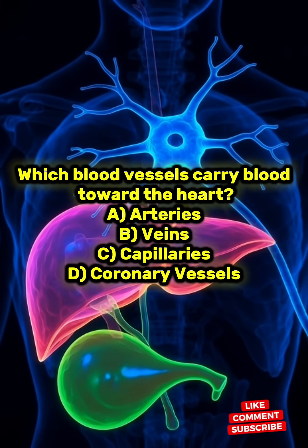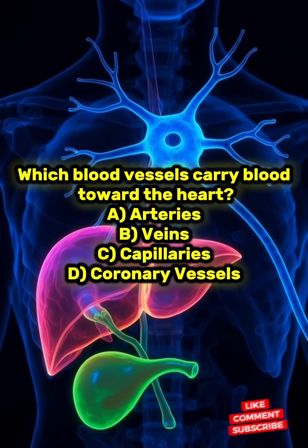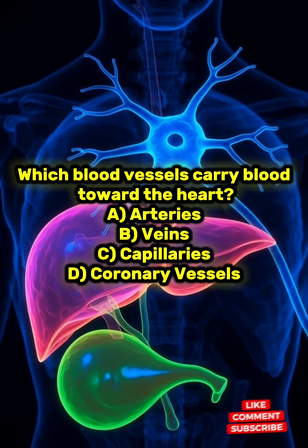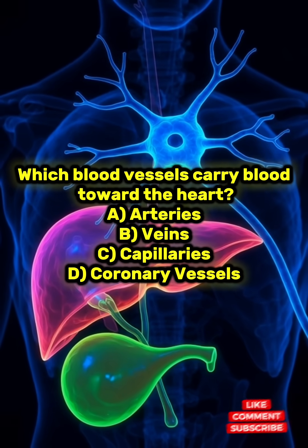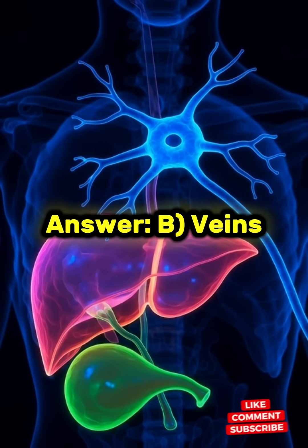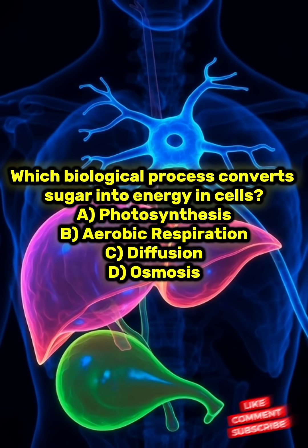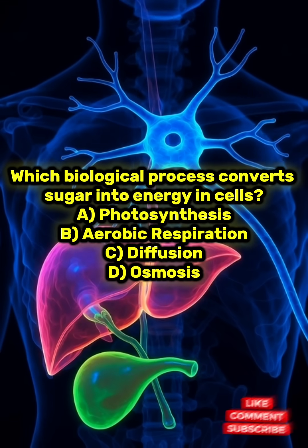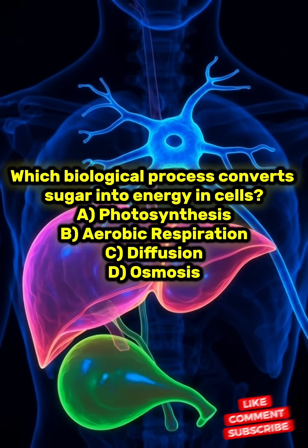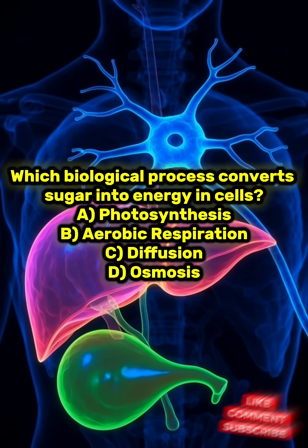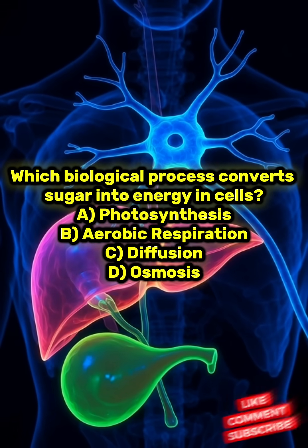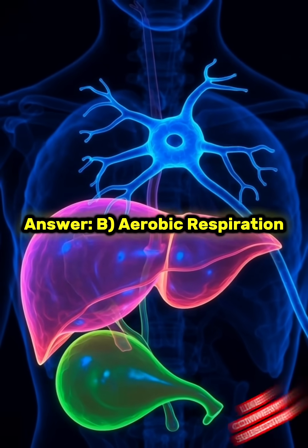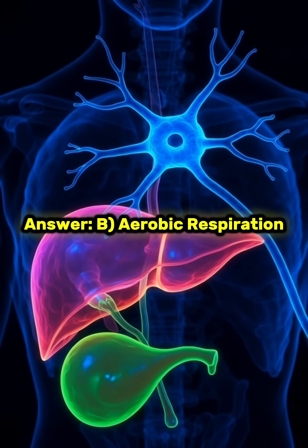Which blood vessels carry blood toward the heart? A) Arteries, B) Veins, C) Capillaries, D) Coronary vessels. Answer: B) Veins. Which biological process converts sugar into energy in cells? A) Photosynthesis, B) Aerobic respiration, C) Diffusion, D) Osmosis. Answer: B) Aerobic respiration.